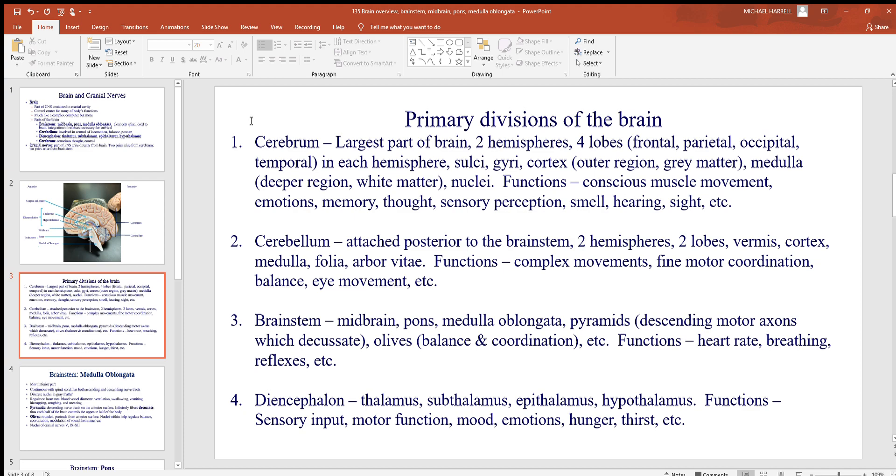Also you find lots and lots of nuclei scattered throughout the cerebrum - nuclei are collections of neurons with particular functions, and there are many of them. Looking at some of the functions of the cerebrum: conscious muscle movement, about just about all you have conscious control over in the body with just a few other exceptions. Memory, emotions, thought, conscious sensory perception, smell, hearing, sight - many many functions associated with the cerebrum.